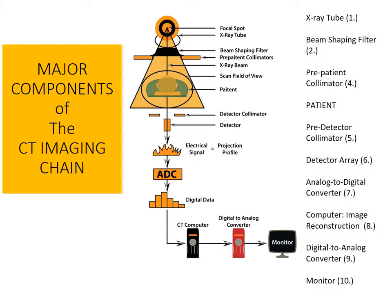The major components of the CT imaging chain include the X-ray tube, the generator — which isn't listed on the diagram here — the beam shaping filter, the pre-patient collimator, the pre-detector collimator, the detector array, the analog to digital converter, the CT computer otherwise known as the array processor, the digital to analog converter, and finally the monitor.